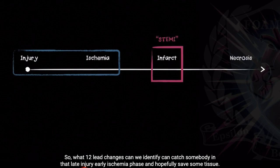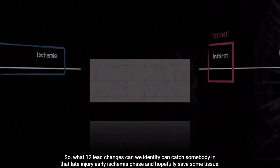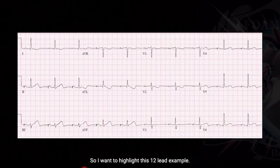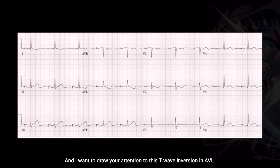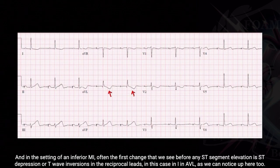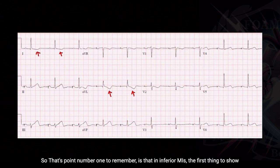So what 12-lead changes can we identify that catch somebody in that late injury, early ischemia phase and hopefully save some tissue? I want to highlight this 12-lead example. Draw your attention to this T wave inversion in aVL — in the setting of an inferior MI, often the first change we see before any ST segment elevation is ST depression or T wave inversions in the reciprocal leads, in this case Lead I and aVL.